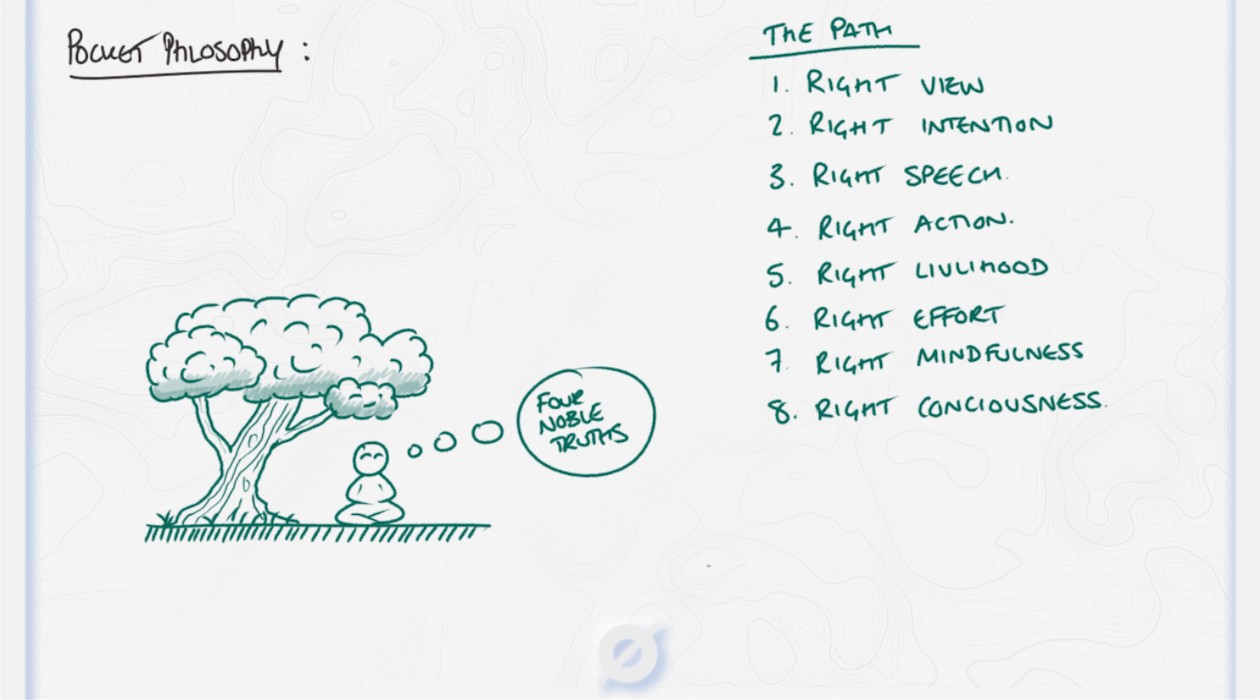Right mindfulness. Being mindful of the teachings that are beneficial to the Buddhist path. And lastly, right consciousness. This is the path of practicing meditation to shift your conscious state.